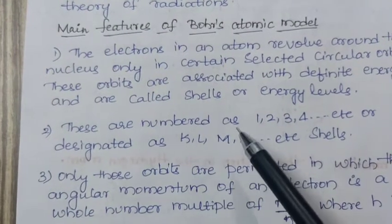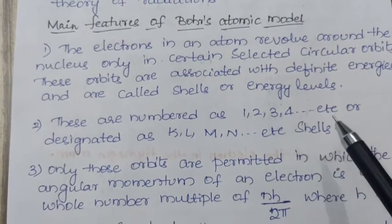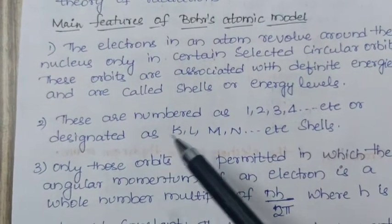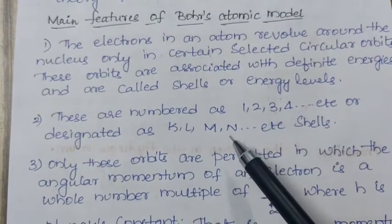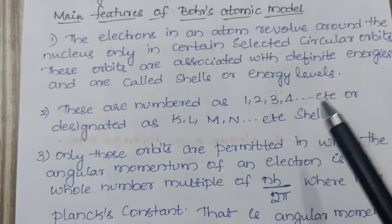These orbits are associated with definite energies and they are called as shells or energy levels. These are numbered as 1, 2, 3, 4, etc. designated as K, L, M, N, etc. shells.